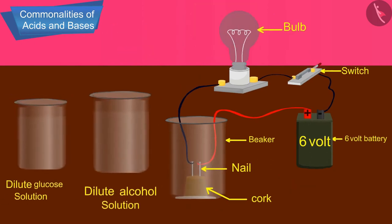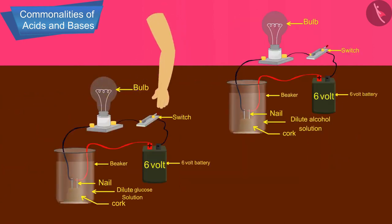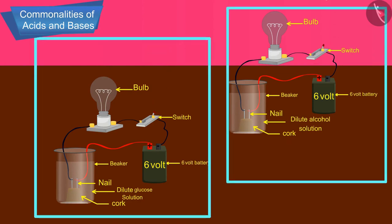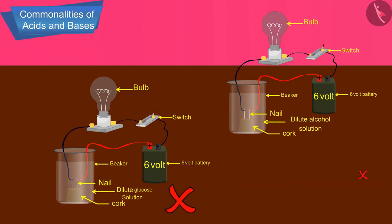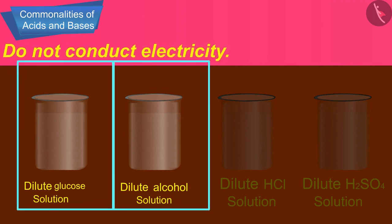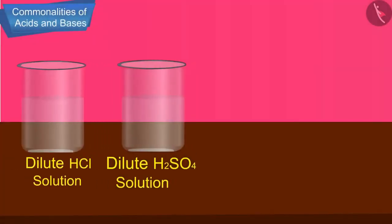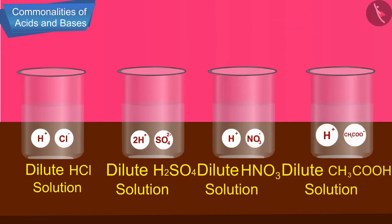Now repeat the experiment separately with glucose and alcohol solutions. What do you observe? Does the bulb glow in all cases? The bulb does not glow in both these cases. This shows that glucose and alcohol solutions do not conduct electricity.